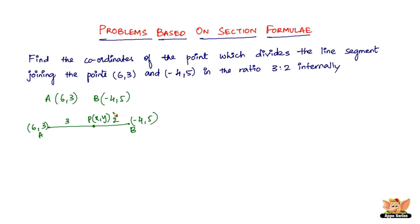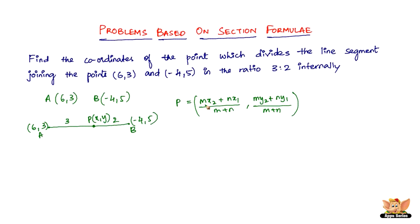We need to find the coordinates of point P which divides the line segment AB in the ratio 3 to 2. The coordinates of P are given by: x = (m·x2 + n·x1) / (m + n) and y = (m·y2 + n·y1) / (m + n). Here m = 3, n = 2, and (x1, y1) = (6, 3), (x2, y2) = (-4, 5). We just substitute into the formula.